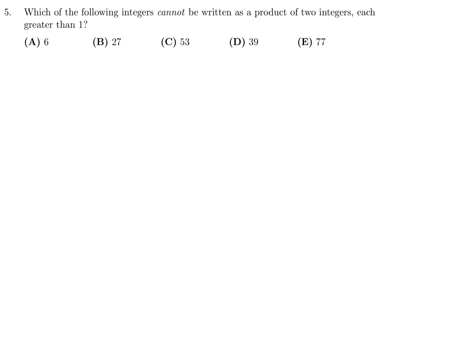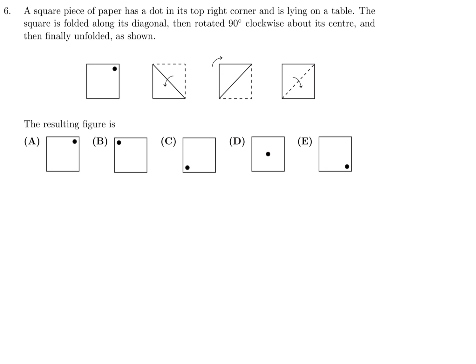Which of the following integers cannot be written as a product of 2 integers each greater than 1? 6 can be written as 2 times 3, 27 can be written as 9 times 3. 53 is a prime number so that cannot be written as the product of two integers where both integers are greater than 1. 39 can be 3 times 13, and 77 is 7 times 11. So the answer for number 5 is C.